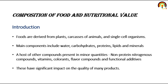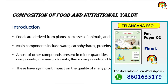Food can be derived from plants like vegetables and fruits, carcass of animals, and single-cell organisms. Food mainly consists of water, carbohydrate, protein, lipid, and minerals. In one line, food consists of macro as well as micronutrients, and these nutrients are required for proper functioning of our body. A host of other compounds present in minor quantity like vitamins, color and flavor compounds, and functional additives are also present in food. Macronutrients are present in larger quantity and have a significant impact on the quality of many products.